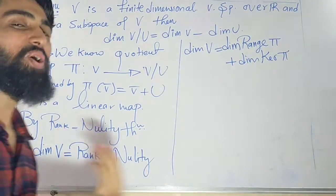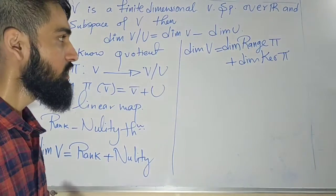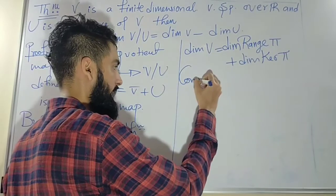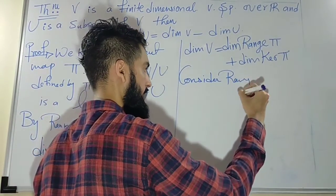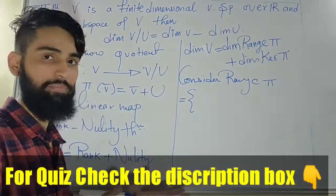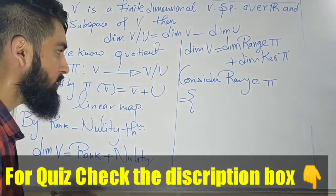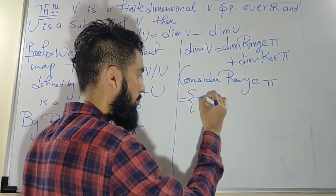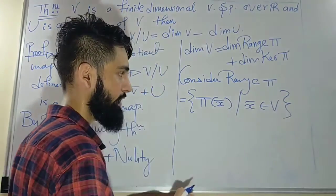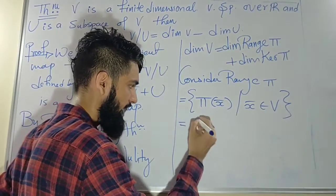After applying rank-nullity, nothing difficult is left. The next task is to find what the range and what the kernel of π are. Let's consider the range of π. There are always two ways to define the range, but in the simple way: the range is the set of all π(x) where x is an element of V.